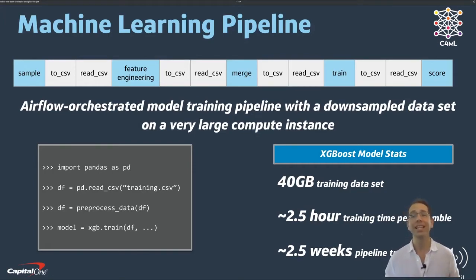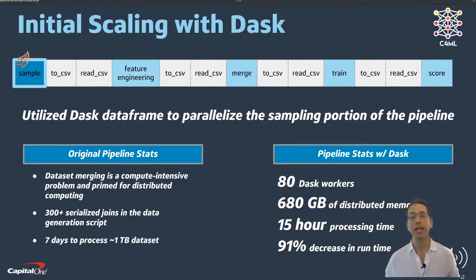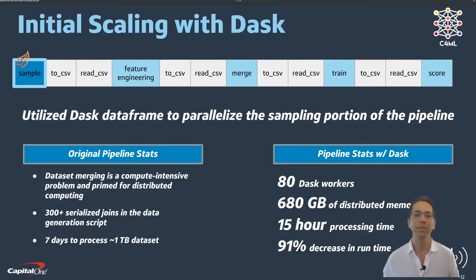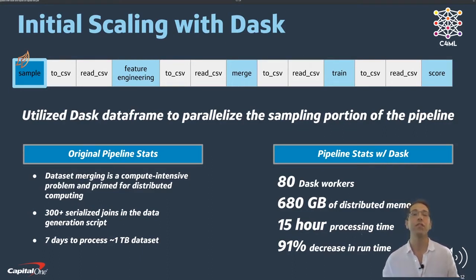The first thing they did is they just ran this pipeline in parallel in an embarrassingly parallel way. They spun up a bunch of Dask workers on the cloud and got a 10x reduction in time. That allows them to iterate much more quickly. If they wait two and a half weeks every time for this model to run, you're not going to change it very often — maybe once a year, once every few months. Now they can change it every day, every week, and that improves their model accuracy over time.